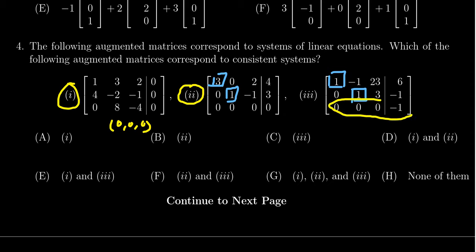If you look at the last equation, which there is a row of zeros, this would suggest that zero equals negative one. And that actually is a contradiction telling us that choice three is inconsistent.